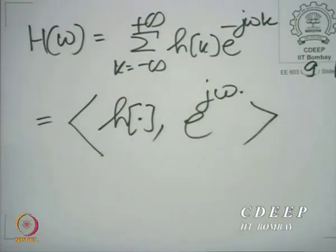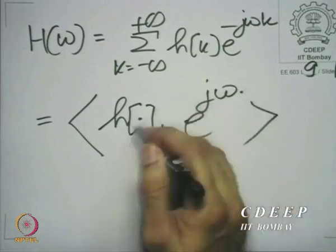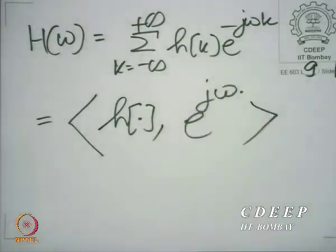Now, this dot denotes the independent variable in the sequence. When we write a dot like this, what we mean is that we are treating the whole sequence as an object. We are not taking an individual sample. If we write n, the tendency is to think of the nth sample only, but here we are not talking about a specific sample — we are talking about the whole sequence as an object. That is very important, and that is why we put a dot there.